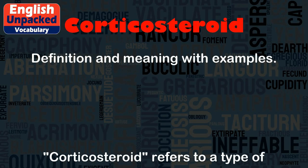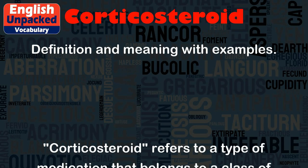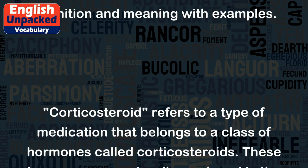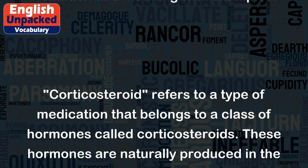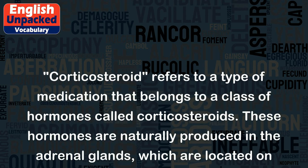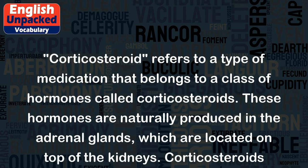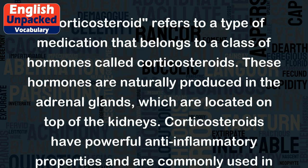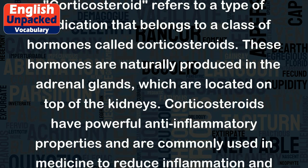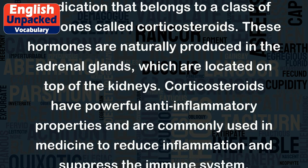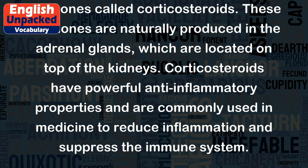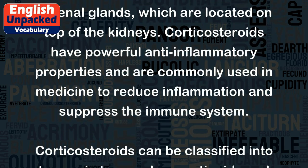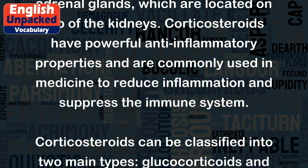Corticosteroid refers to a type of medication that belongs to a class of hormones called corticosteroids. These hormones are naturally produced in the adrenal glands, which are located on top of the kidneys. Corticosteroids have powerful anti-inflammatory properties and are commonly used in medicine to reduce inflammation and suppress the immune system.